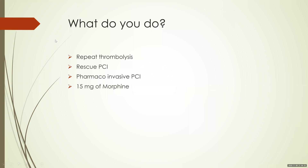So what do you do for this case? Remember, this patient has a failed lysis with increased ST elevation as well as increased pain — you need to do something. Option A: repeat thrombolysis. Option B: rescue PCI. Option C: pharmaco-invasive PCI. Option D: give 15 milligrams of morphine.